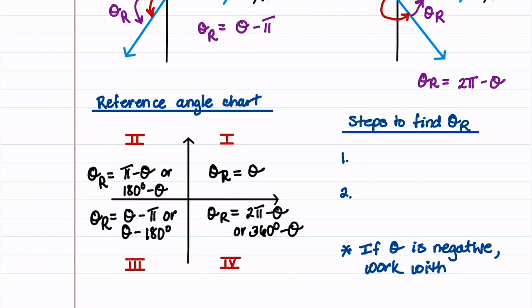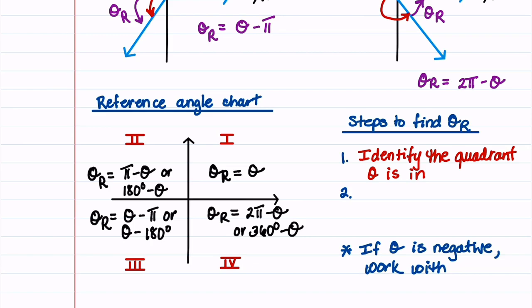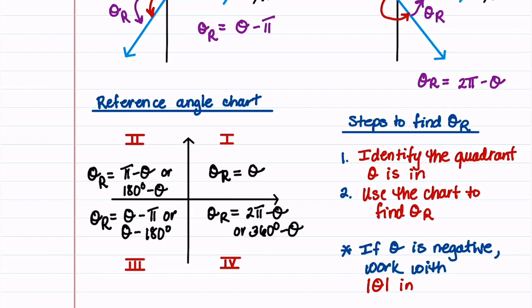Let's now go over the steps to find a reference angle. The first step is to identify the quadrant theta is in. The second step is to use the chart to find theta sub r. One important note: if theta is negative, we need to work with the absolute value of theta instead, and then everything else stays the same.